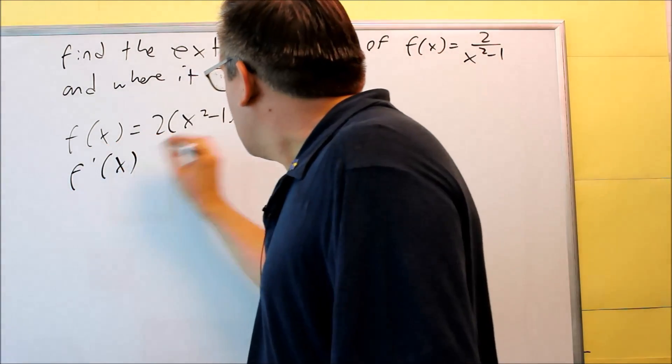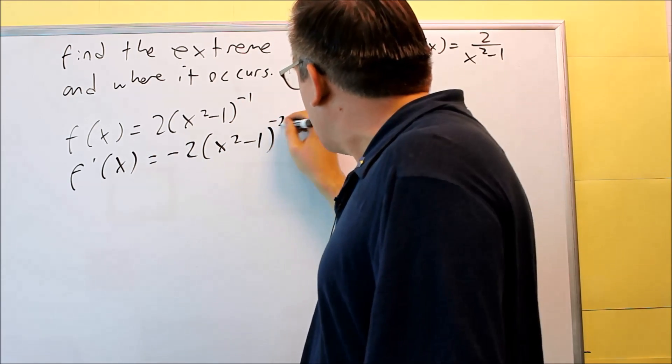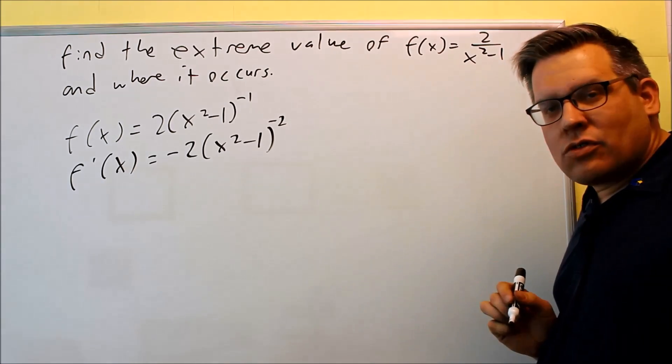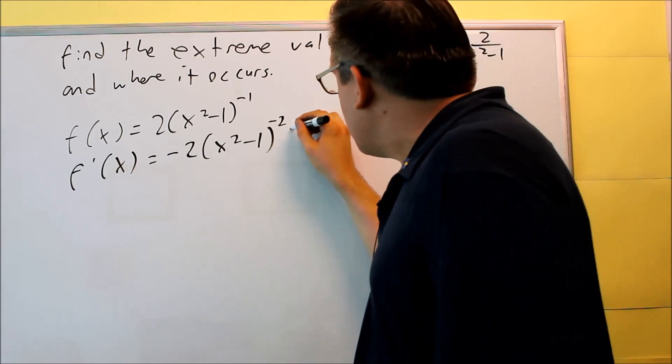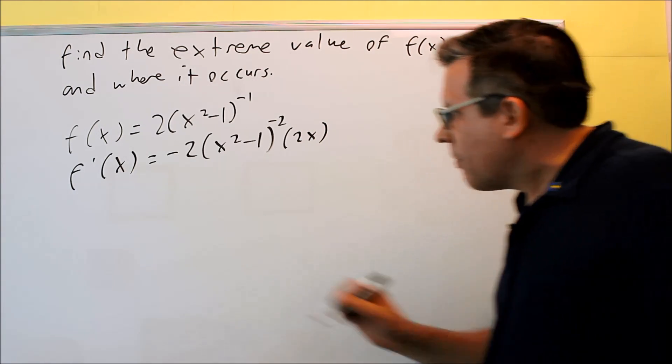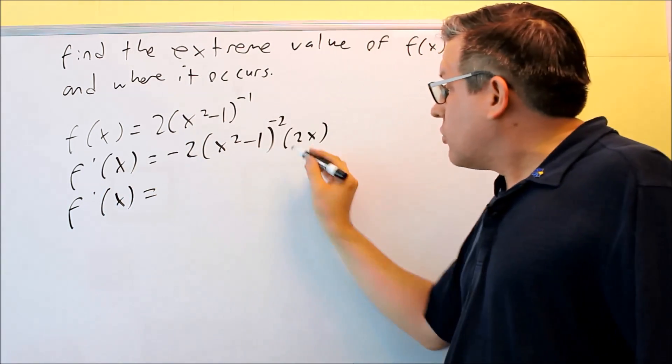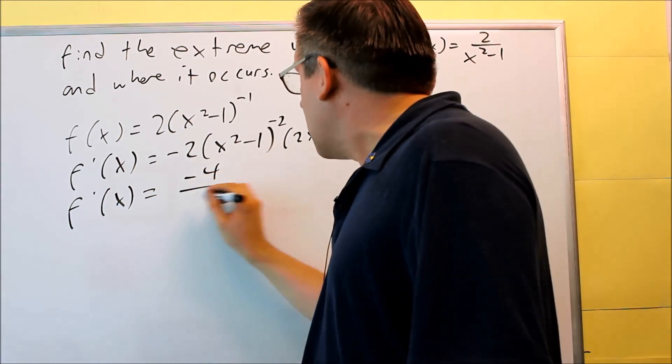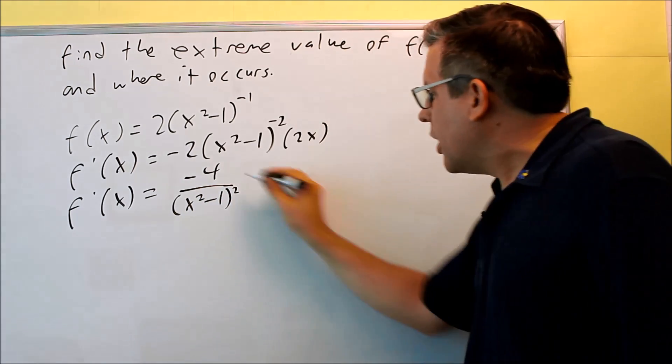To do the derivative, bring down negative 1, I get negative 2x squared minus 1, subtract 1 from the power, I get negative 2, but don't forget to multiply by the derivative of the inside and the inside is going to be 2x. Let's rewrite this. Negative 2 and 2 is negative 4, and the bottom I get x squared minus 1 squared, the x there.